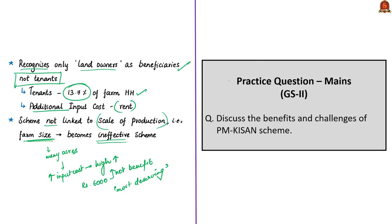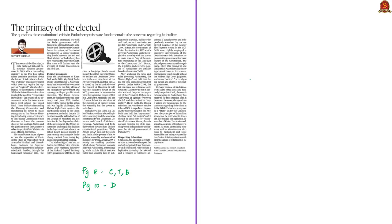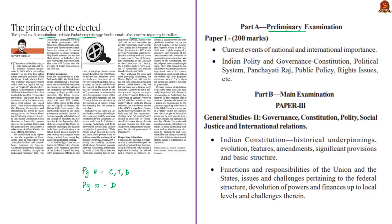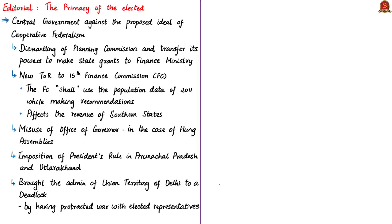Moving on to the next article discussion, which is about the constitutional crisis in Puducherry and concerns with respect to federalism. This will be part of the prelim syllabus under current events of national importance and Indian polity and governance. It is also helpful in the main syllabus in GS Paper 2 under the Indian constitution — its evolution, significant provisions and basic structure — and especially under issues and challenges pertaining to the federal structure. The author highlights instances when the present ruling alliance at the central government went against its proposed ideal of cooperative federalism in the last five years.